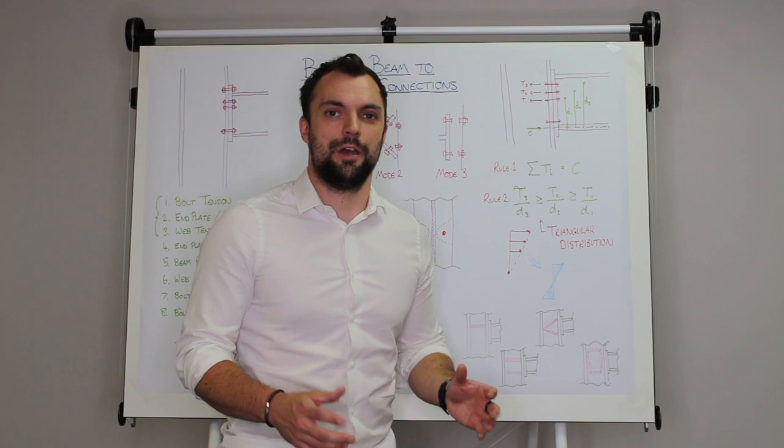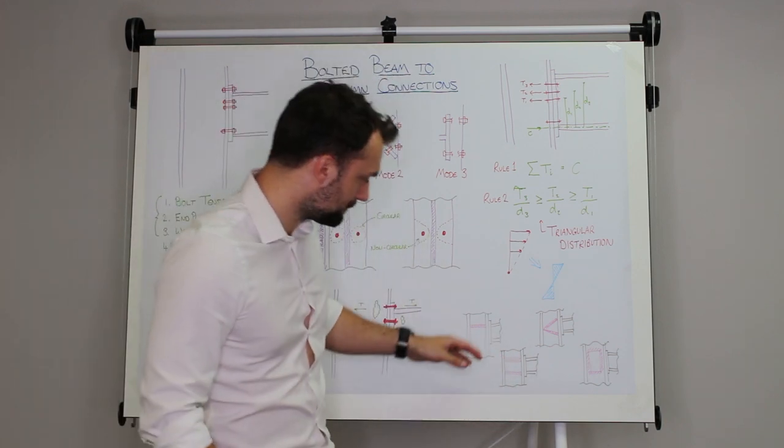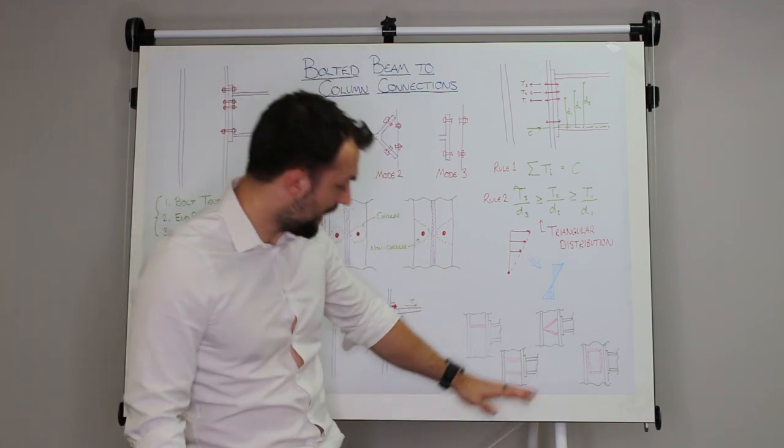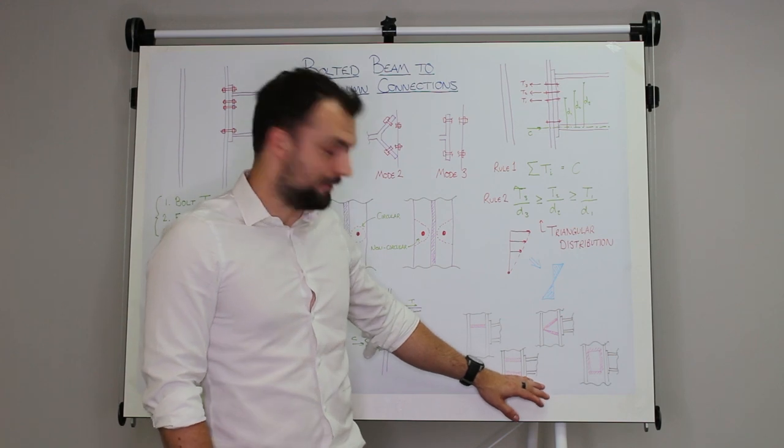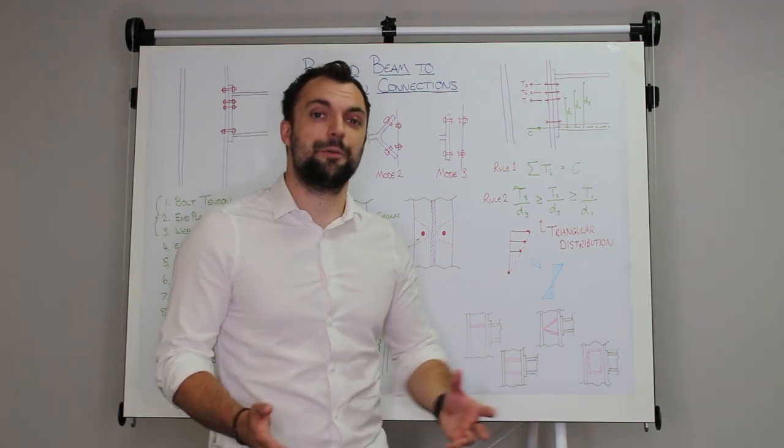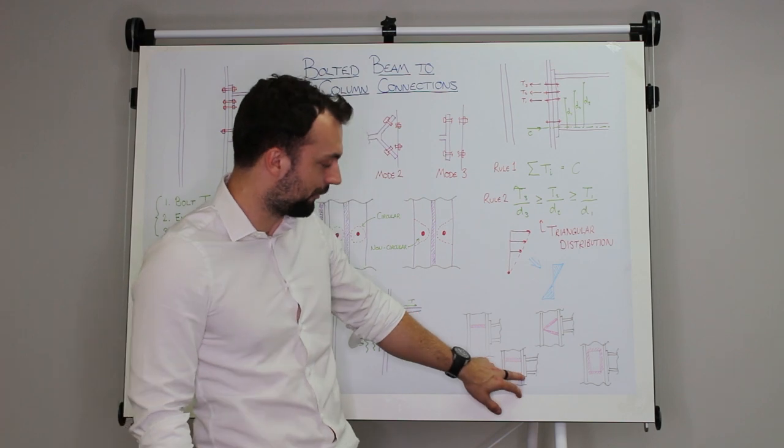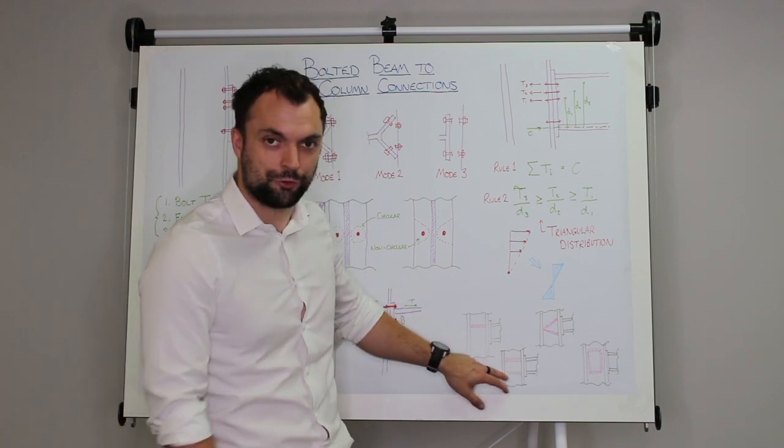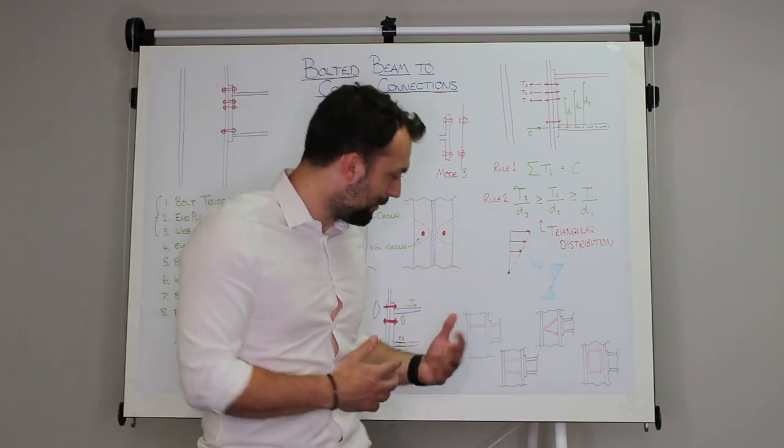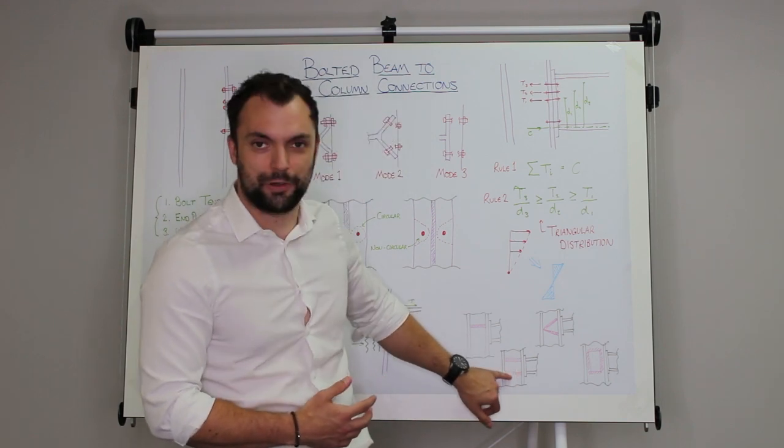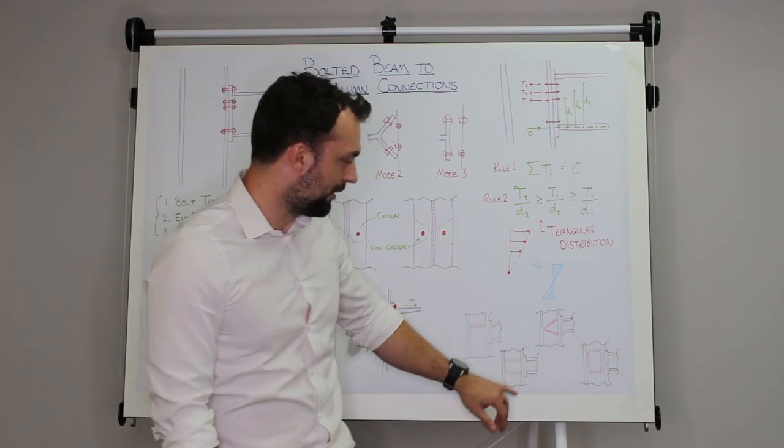Compression, so you could add a second stiffener underneath at the compression zone and again it's the same principle. It carries the compression forces from this flange to that flange and counteracts the idea of this web buckling or this web getting yielding due to compression.